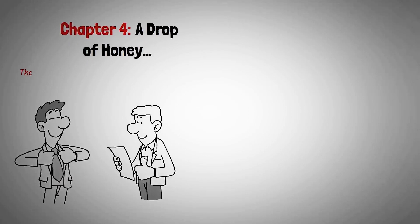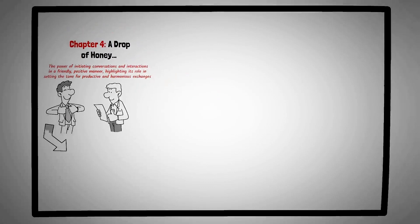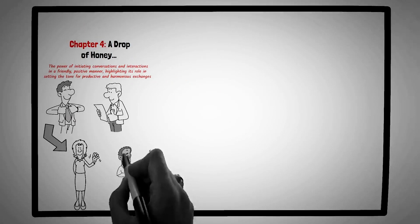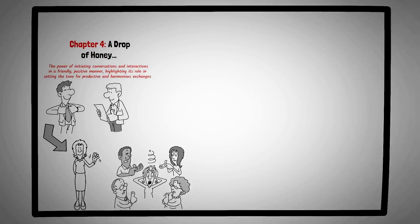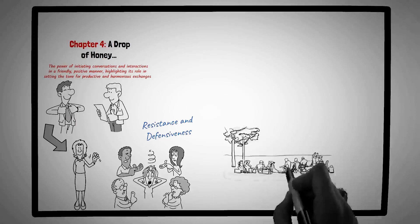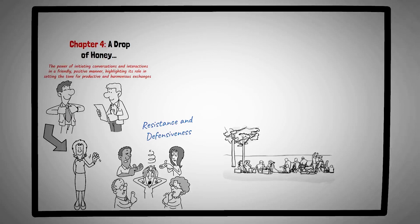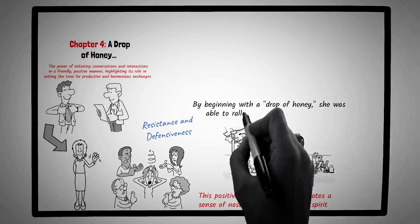Chapter four, a drop of honey. The age-old adage, you catch more flies with honey than with vinegar, rings true in human interactions as well. This chapter emphasizes the power of initiating conversations and interactions in a friendly, positive manner, highlighting its role in setting the tone for productive and harmonious exchanges. Consider the story of Tara, a community leader trying to rally her neighborhood to support a local park renovation. Initially, she approaches the project with a sense of urgency and frustration, pointing out the park's deteriorated state and criticizing the local councils in action. Her approach is met with resistance and defensiveness. Realizing her strategy isn't working, Tara decides to change her approach. She organizes a community picnic at the park, inviting families to enjoy a day out and reminisce about their favorite memories associated with the park. This positive, friendly gathering creates a sense of nostalgia and community spirit. When Tara later presents her renovation proposal, it's met with enthusiasm and support. By beginning with a drop of honey, she was able to rally her community effectively.